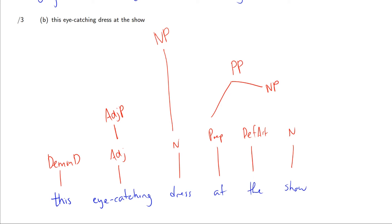How do we know these all connect to this big NP? Well, this is the determiner for the dress. So we're talking about this dress. The dress happens to be eye-catching, so we're describing it like that, connecting the adjective phrase to the noun, and then we're saying this is the dress that happens to be at the show. So at the show is also describing where the dress is, which means it also connects to the noun phrase.